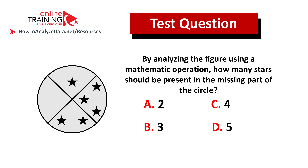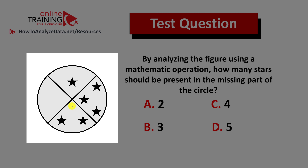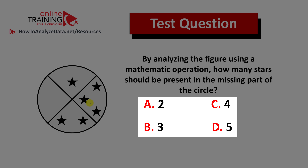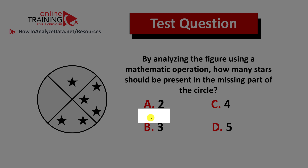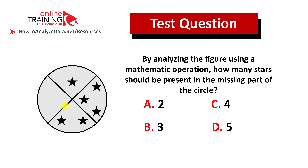Let's look at a tricky question which tests your reasoning as well as math skills. By analyzing the figure using a mathematical operation, how many stars should be present in the missing part of the circle? You're presented with a circle broken into four equal parts — three parts already have stars: one, two, and three stars respectively. You have four choices: A — two, B — three, C — four, D — five. Give yourself 10 to 20 seconds to come up with the answer on your own.